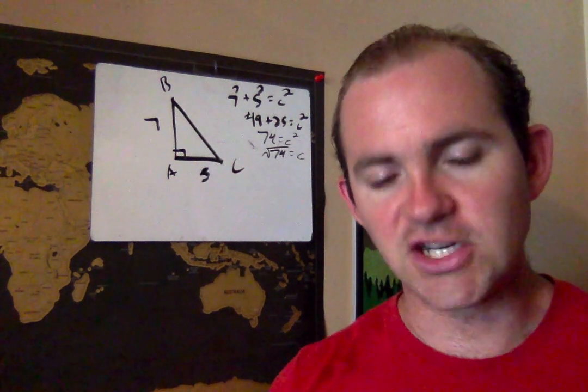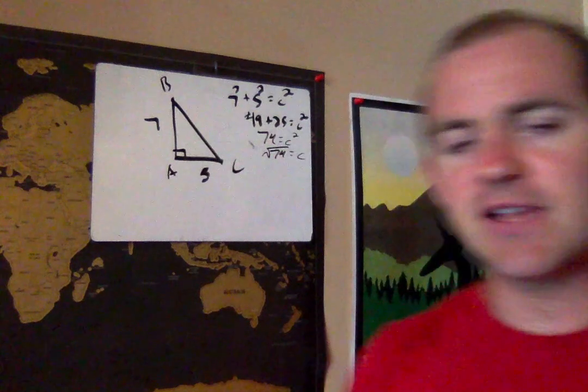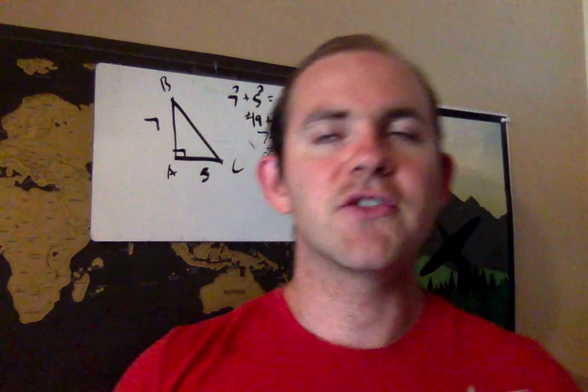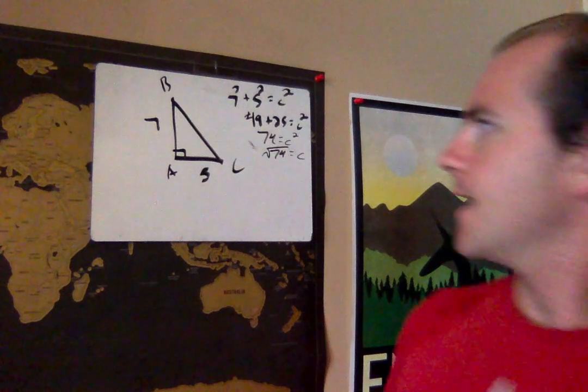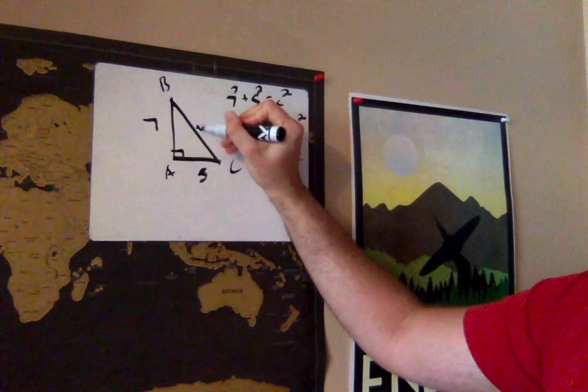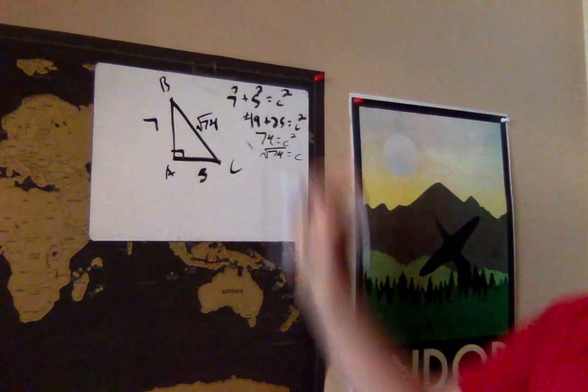So just be mindful. Make sure that you read the directions for each question. Some of them will ask you to leave it to the nearest tenth, others to the nearest whole number. Just make sure you read what they ask for. So we've got that this right over here is root 74. So far, so good.